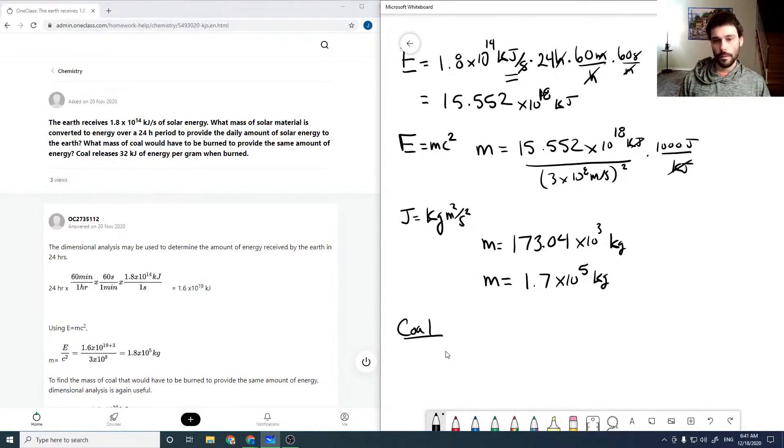So then again, we can use some unit analysis here to find that if our energy is 15.552 times 10 to the 18 kilojoules, then we'll end up with a mass if we divide by 32 kilojoules per gram. Because then our kilojoules will cancel, and the gram will come up top.